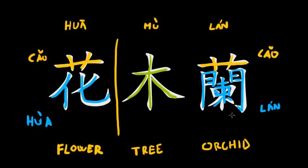I've heard — though I'm not entirely sure — that these two characters together, Mu Lan, are still in use today as the name of a flower, I think it's called a chrysanthemum. In any case, Mu Lan is also a name of a flower today. I hope you enjoyed this presentation and that I gave you a little more insight into the name Hua Mu Lan — how to write these three characters, what they mean, and what they are made up of.